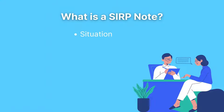SBAR Notes have four sections, with the first one being Situation. Here you explain what the client's concerns are, what their problem is, what needs treating, and remember to include evidence to support your judgments.